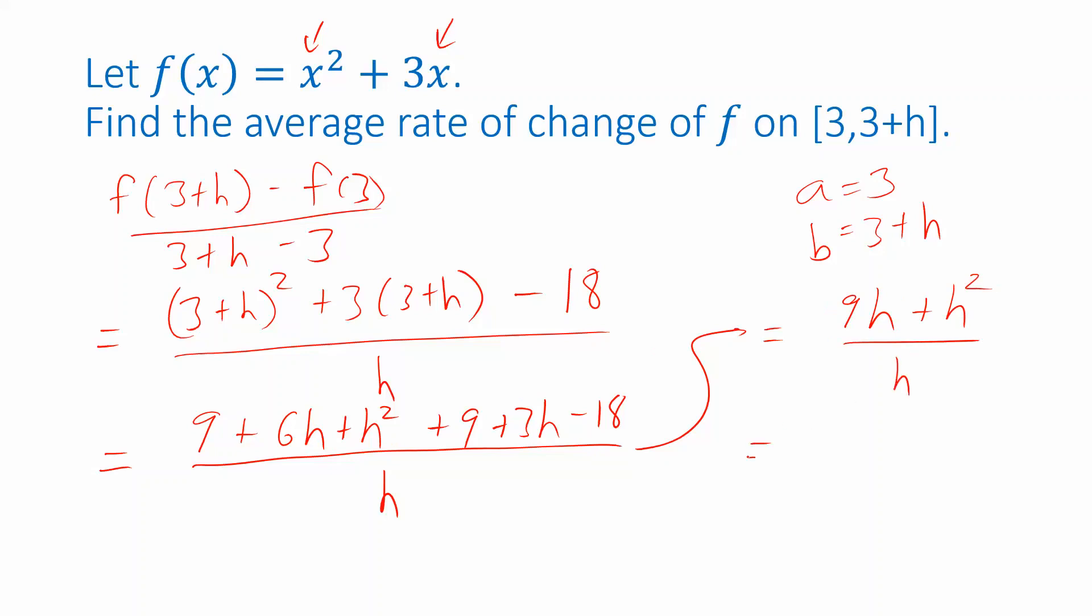Now in the numerator I can factor out an h. And once that's factored out we can see that it cancels with the h that's in the denominator. So we end up with the expression 9 plus h. So I have an unknown h in the answer but that's because I have an unknown h I'm plugging in as one of my endpoints as part of the endpoint 3 plus h.